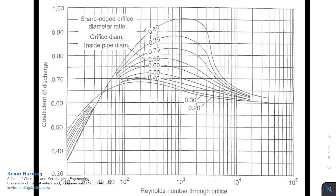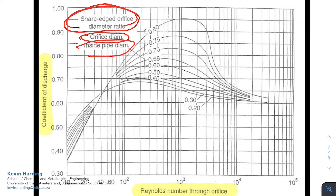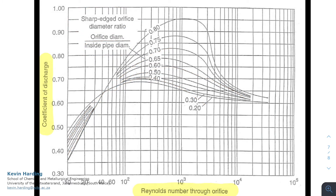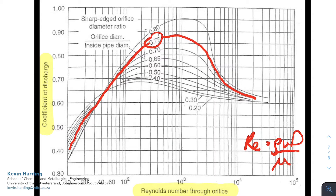For example, if the diameter ratio is 0.75 we look at that particular curve on the graph. We calculate the Reynolds number — Re equals rho times v times d over mu — through the orifice (note: it's through the orifice, not the pipe). We read up to the appropriate curve and then across to the left to find the Cd value, which in this example would be just above 0.8.